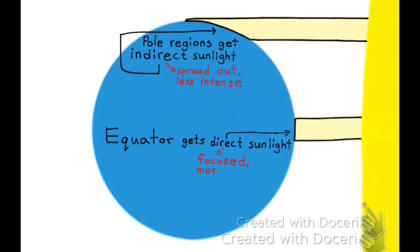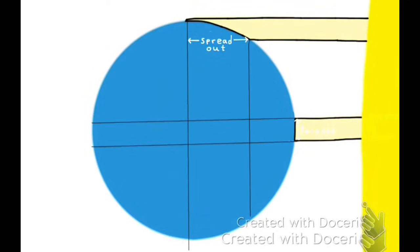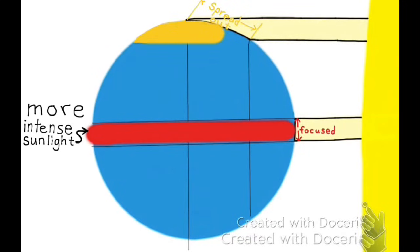This diagram shows how much the light is spread out across the poles. It's the same amount of light, but it's spread out, and since it's spread out, it's a lot less intense. The same amount of light at the equator has a much more narrow focus, causing the temperatures to be warmer.